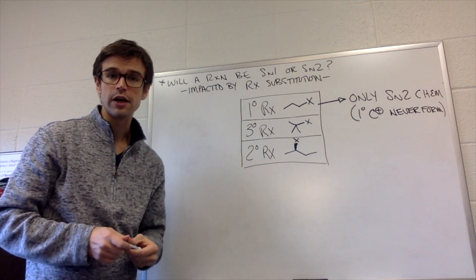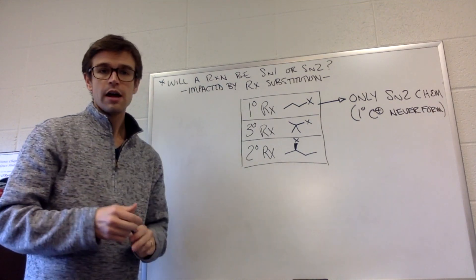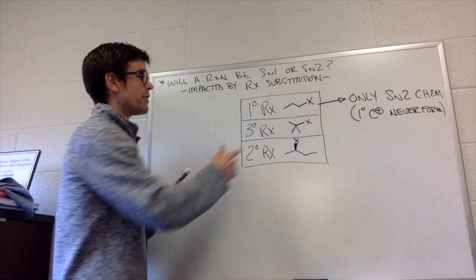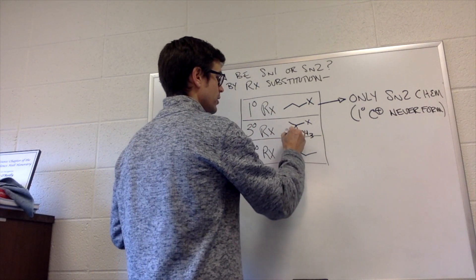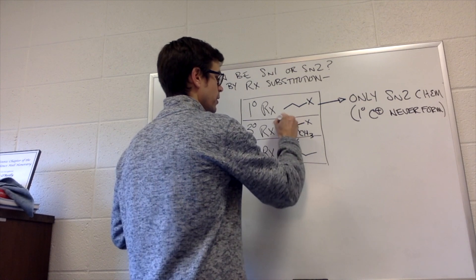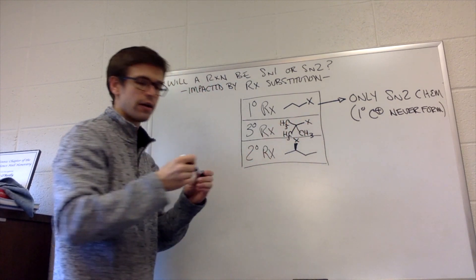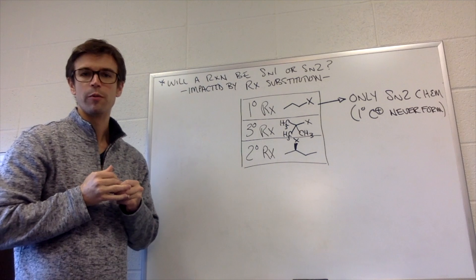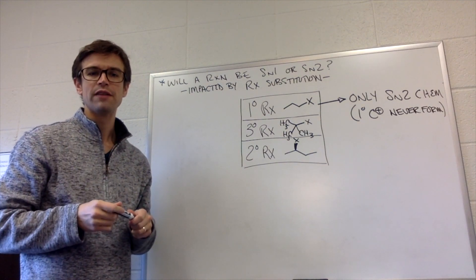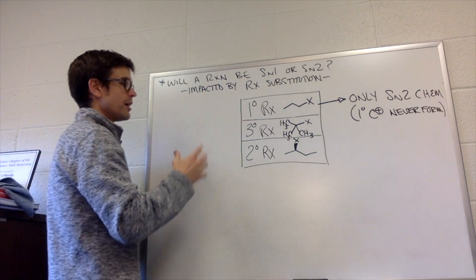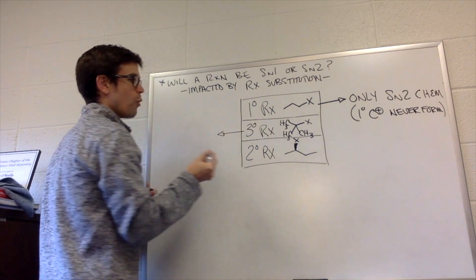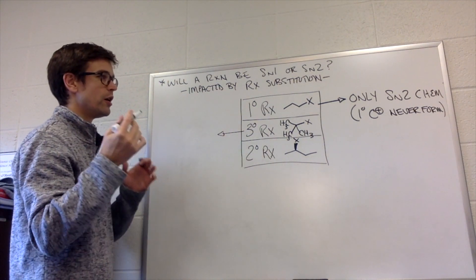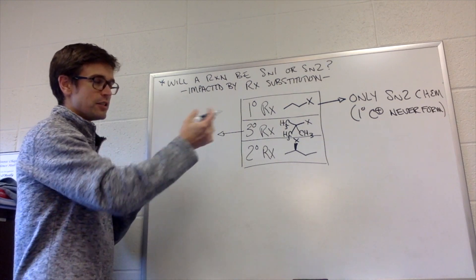What about a tertiary alkyl halide? Again, what about the accessibility of that sigma star orbital? Well, we have three large CH3s that are all hanging right around that small sigma star orbital, which is where the nucleophile would have to add its electrons. Because of that, anytime we have a tertiary alkyl halide, there's no way for it to do SN2 chemistry.